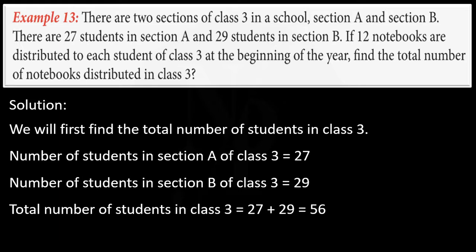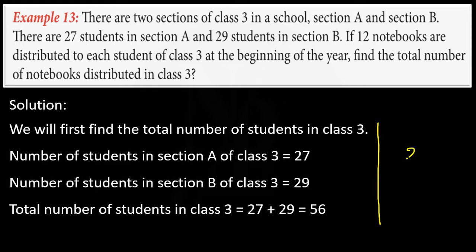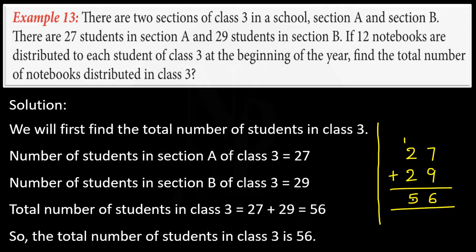This should be done in a rough workspace in your notebook. In the rough work: 27 plus 29 — 7 plus 9 is 16, so we write 6 in ones place and carry 1 ten forward. 2 plus 2 is 4, plus 1 is 5, giving 5 tens. Therefore 56 is the sum. The total number of students in class 3 is 56.